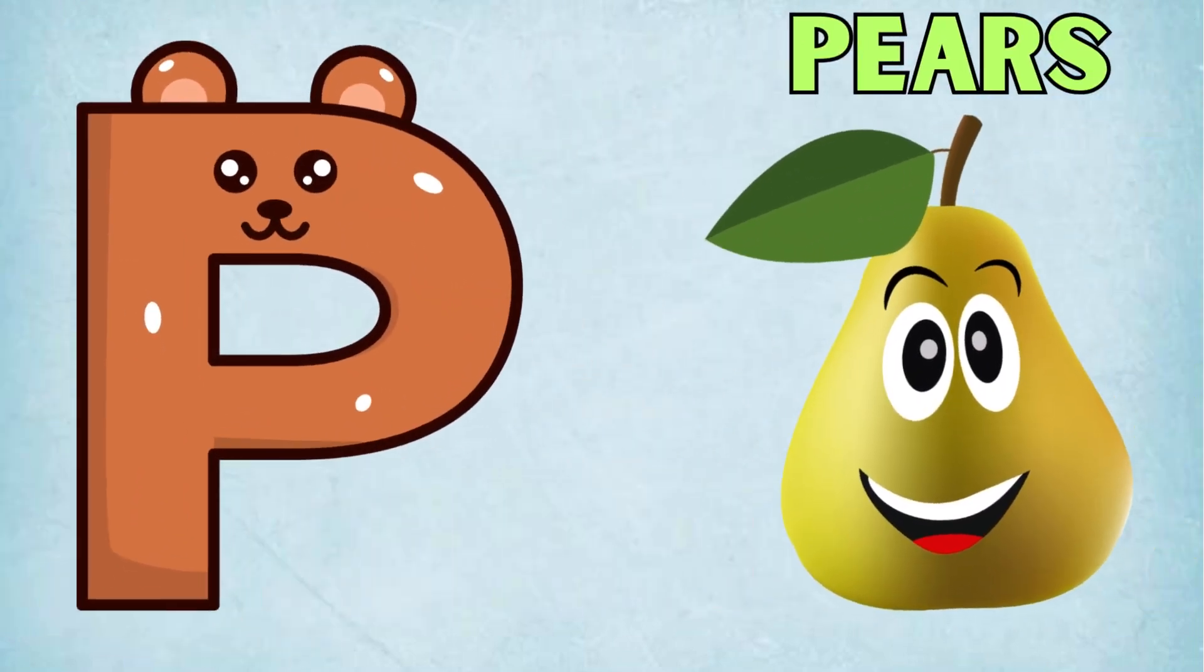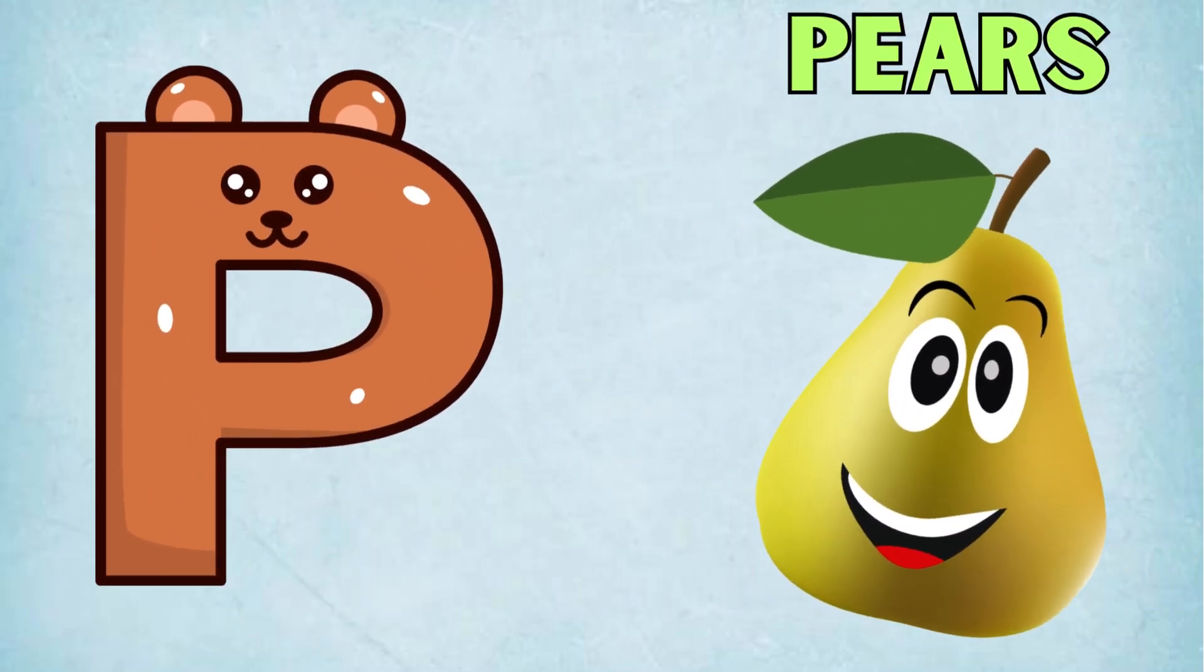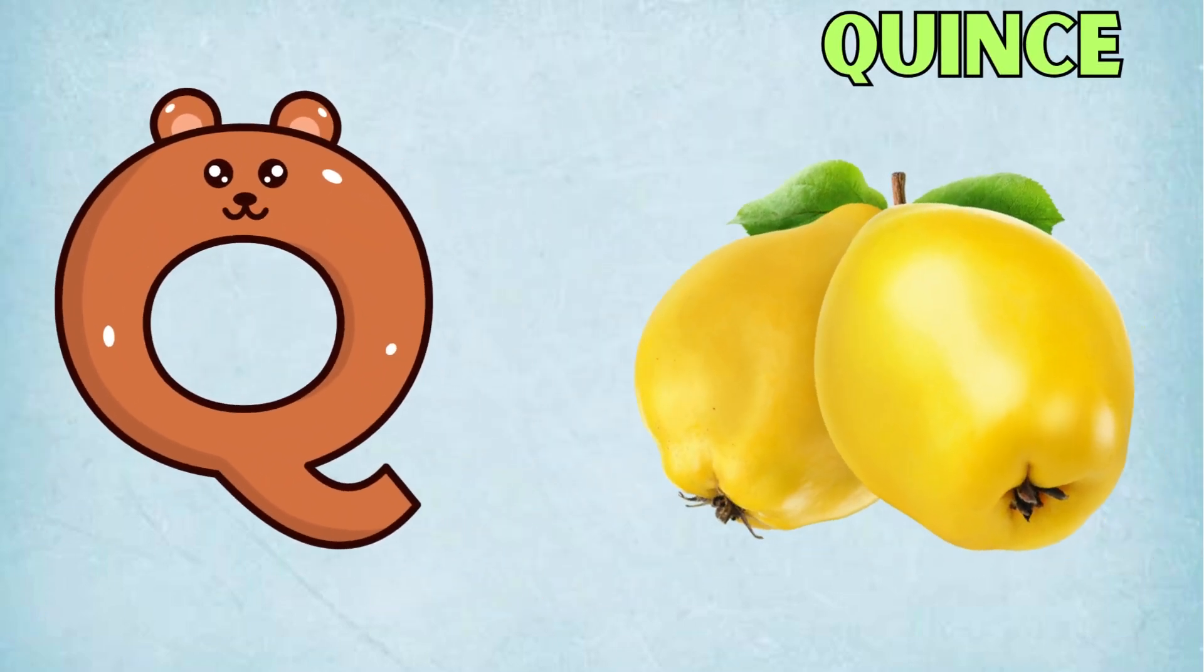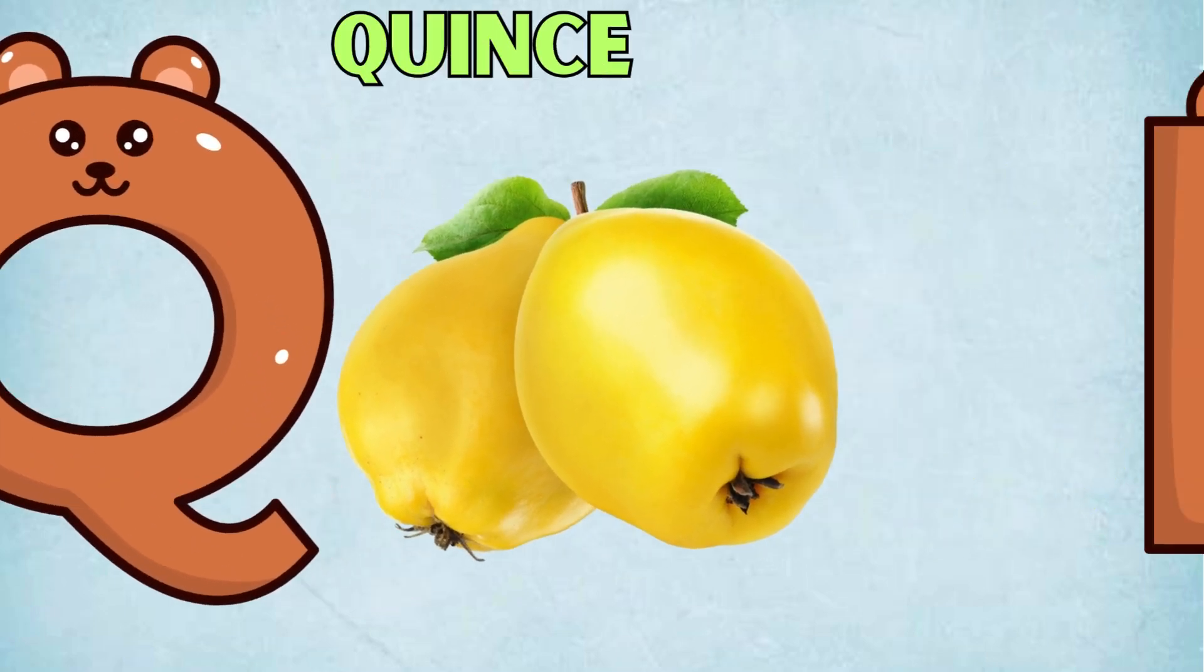P is for Pears, P, P, Pears. Q is for Quince, Q, Q, Quince.